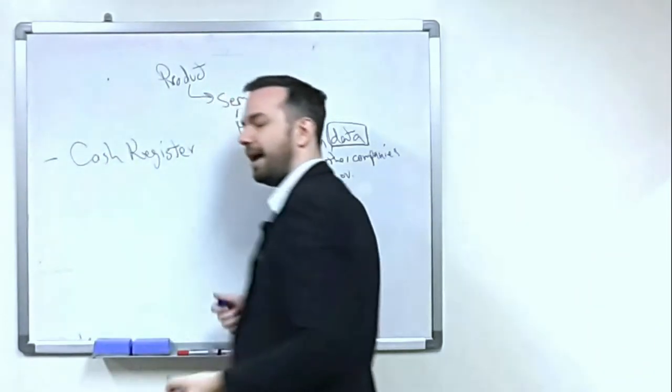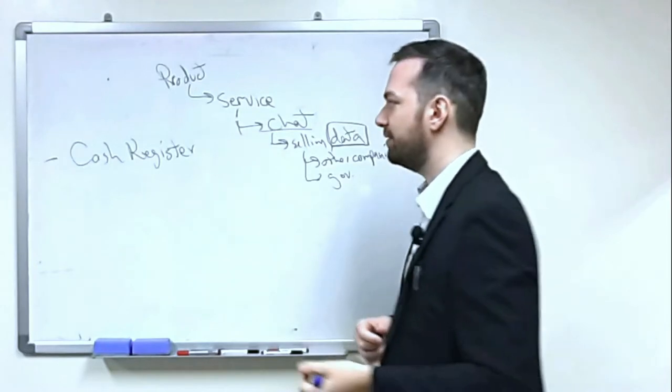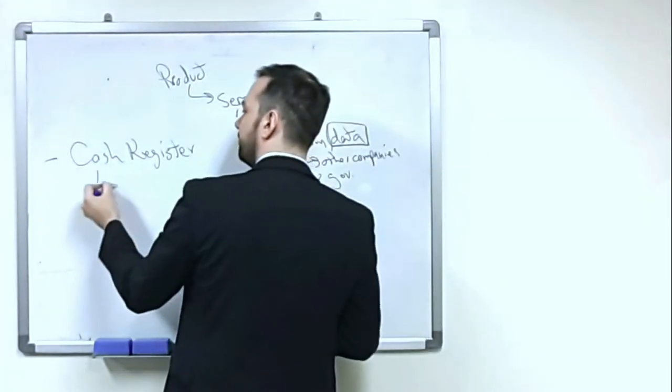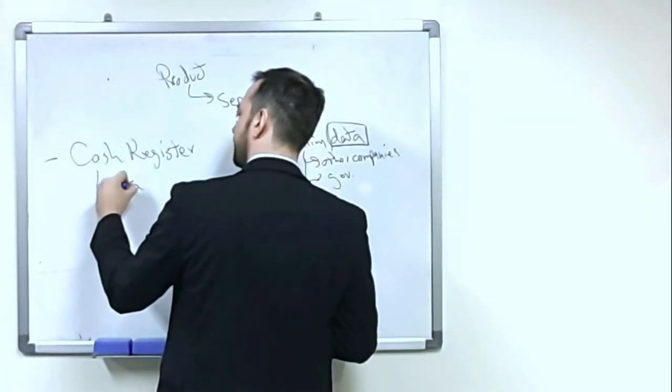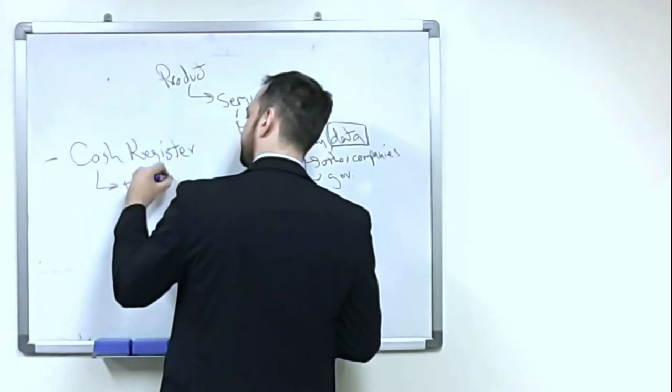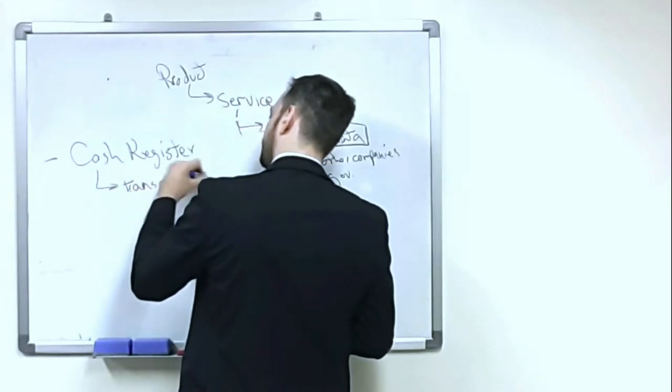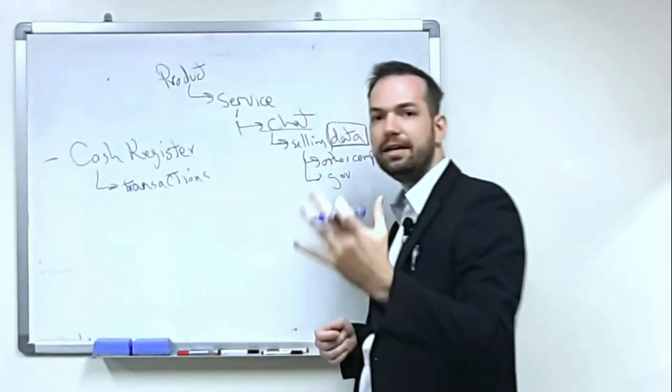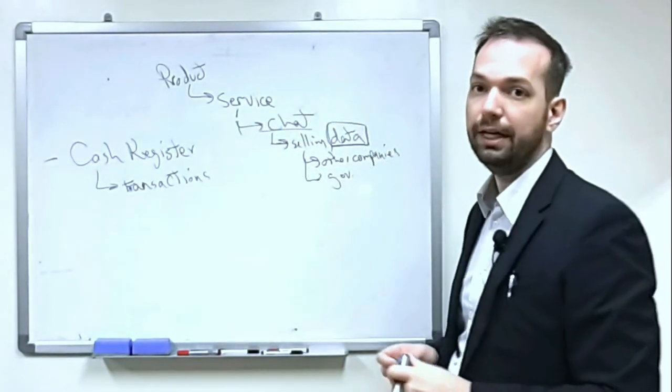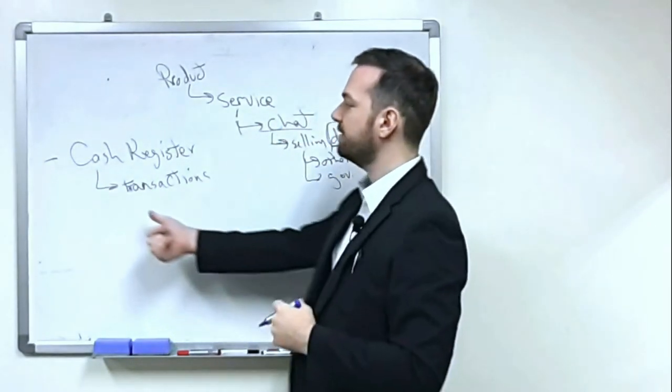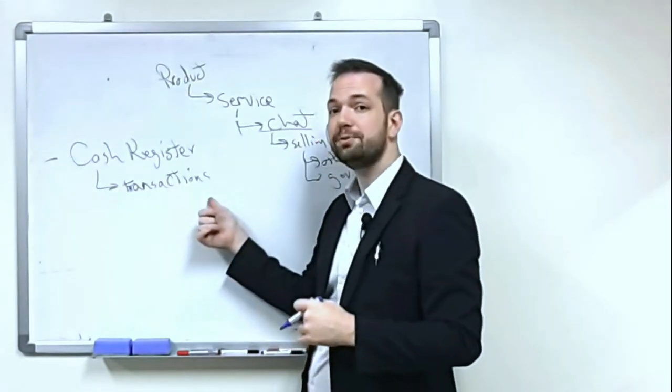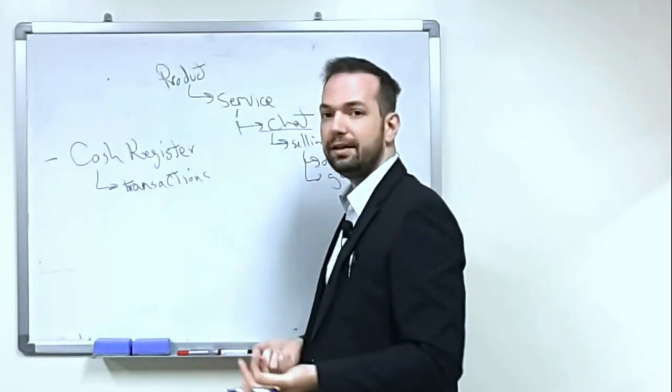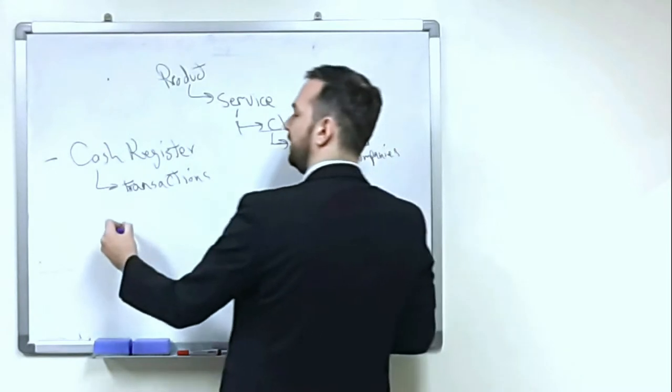All right, so they have a cash register and that cash register has data on all of the transactions, all of the coffee, all of the cake, everything that they've sold in their business. It has all of the transactions in the cash register. Well, with that data, you can start to predict things.